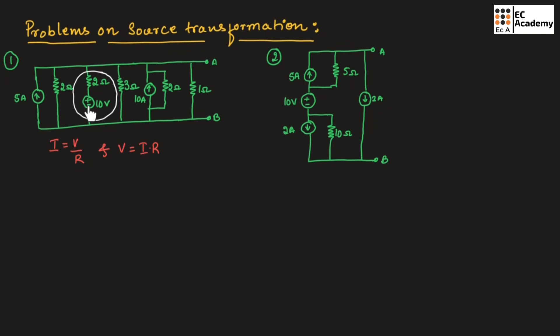Now we are converting this voltage source into current source, which means this voltage should be divided by this resistor value and we need to write the current source. This resistor should be connected in parallel with the current source.